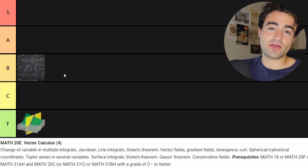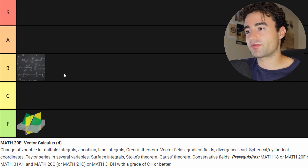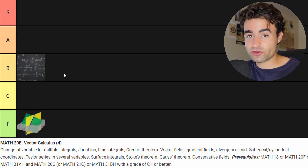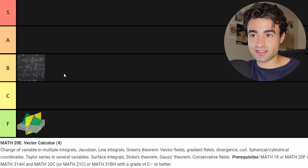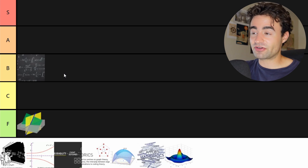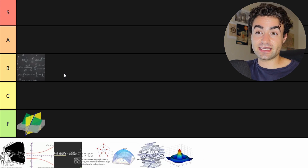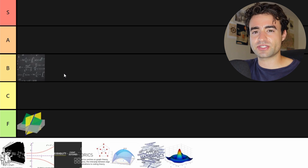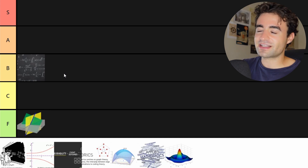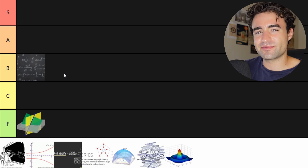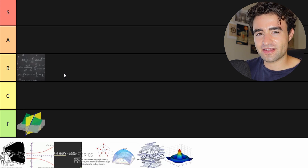Obviously the difficulty varied from class to class. Math 20B was by far one of the hardest. The others — I remember D and E being actually pretty decent, and I had a very comfortable understanding of what was going on. So aggregating them all, I think they're a solid B tier math class.